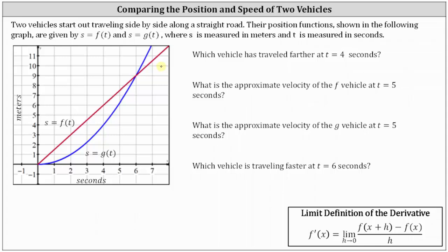Let's start by determining the points on both graphs where t equals four seconds. On the blue graph, we have the point four comma four, which indicates that g of four is equal to four. So vehicle g has traveled four meters after four seconds. Focusing on the red graph, we have the point four comma six, which indicates f of four is equal to six. Vehicle f has traveled six meters after four seconds, and therefore vehicle f has traveled further.